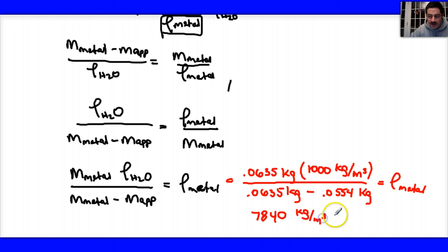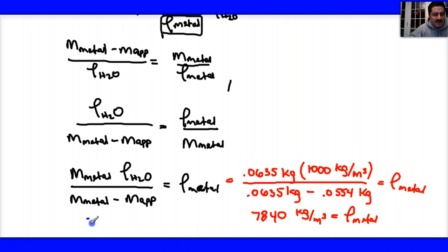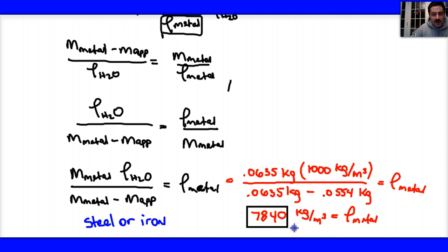Looking that up in table 10.1, you can recognize that 7840 kilograms per cubic meter corresponds to steel or iron. So based on our calculation, steel or iron are the probable unknown materials.